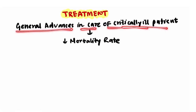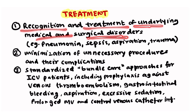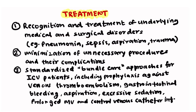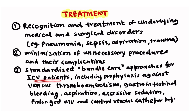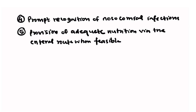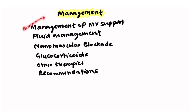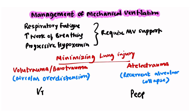General advances in care of critically ill patients have led to decreased ARDS mortality. Key management factors include recognition and treatment of the underlying disorder, minimization of unnecessary procedures and complications, standardized bundle-of-care approaches covering prophylaxis against venous thromboembolism, GI bleeding, aspiration, excessive sedation, prolonged mechanical ventilation, and central venous catheter infection. Prompt recognition of nosocomial infections and adequate enteral nutrition are also essential.